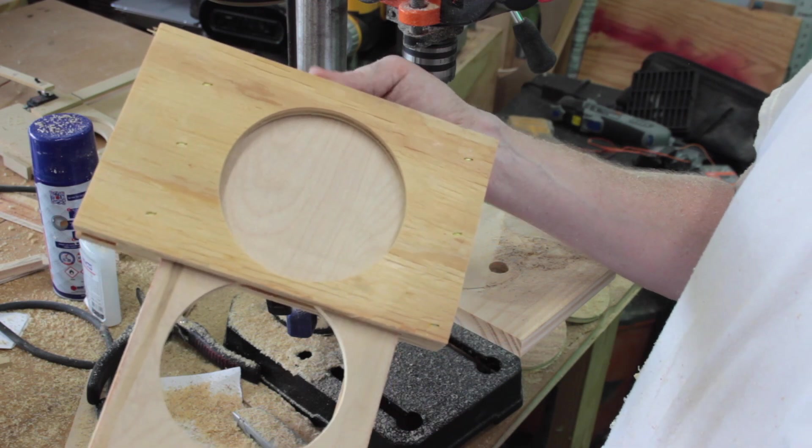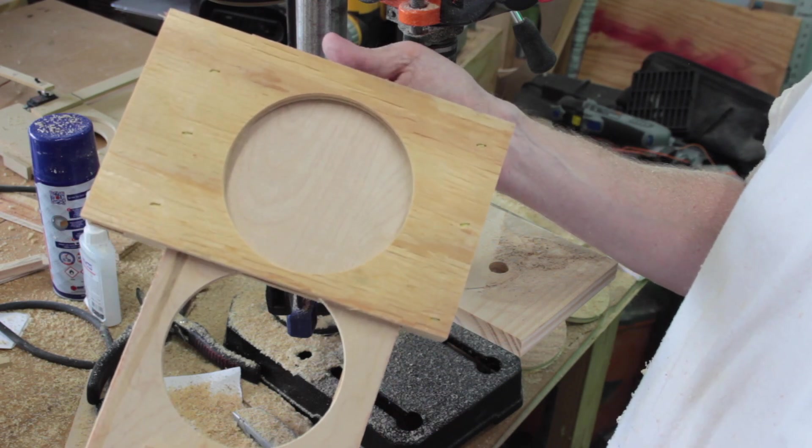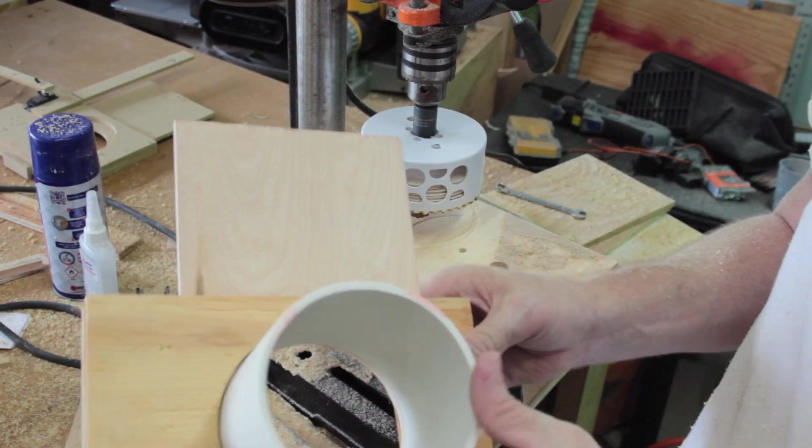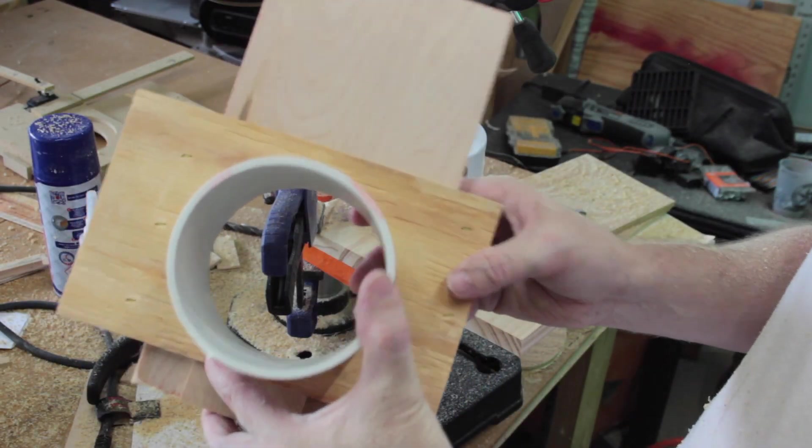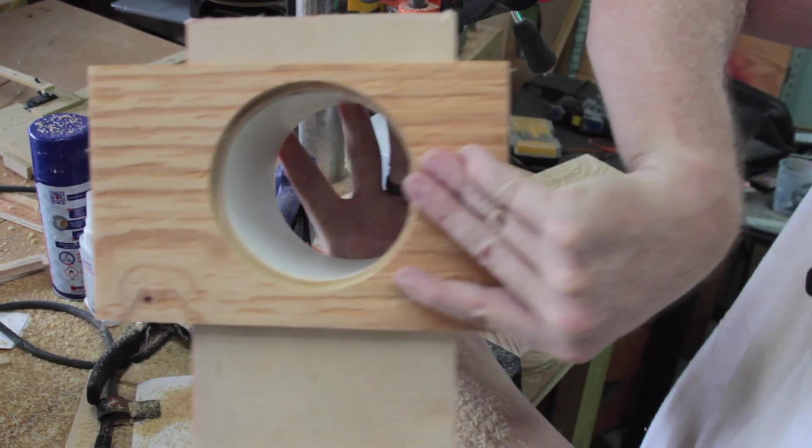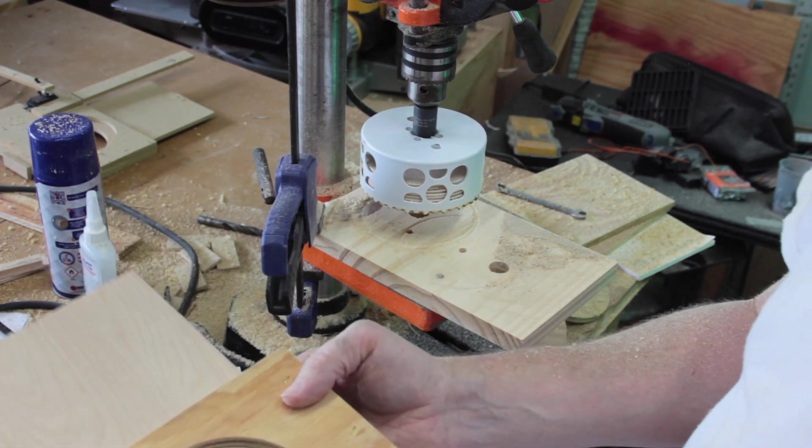So the PVC will fit all the way down and be up against the gate and the circumference of this will line up perfectly with the inside of the PVC so let's get these marked and then we'll start cooking.